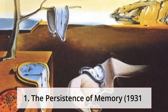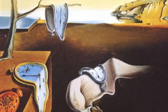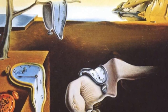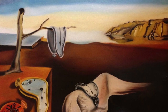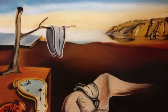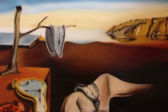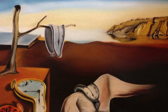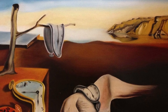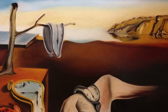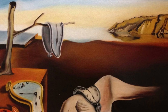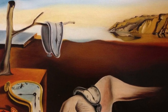1. The Persistence of Memory, 1931. Hard objects become inexplicably limp in this bleak and infinite dreamscape, while metal attracts ants like rotting flesh. Here time must lose all meaning. Permanence goes with it. Ants, a common theme in Dali's work, represent decay, particularly when they attack a gold watch, and they seem grotesquely organic.